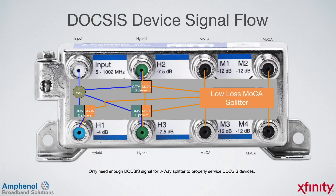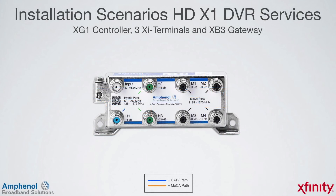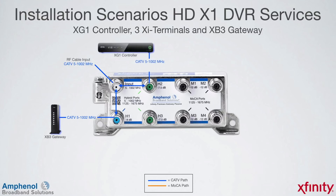The DOCSIS passive device only needs enough signal for a three-way splitter to properly service the DOCSIS devices. Let's look at the signal flow for an X1 DVR installation using an XG1 controller, three XI device terminals, and an XB3 gateway. First, we'll follow the traditional cable TV frequency path. The input port will pass traditional cable TV frequencies from 5 to 1002 MHz. From the input port, the signal flows to the blue low-loss H1 hybrid port where we'll connect the XB3 gateway. The input port also feeds the two high-loss hybrid ports — on the top H2 port we'll connect the XG1 controller. In this example, we won't be using the bottom H3 port, so we'll add a terminator to this port.